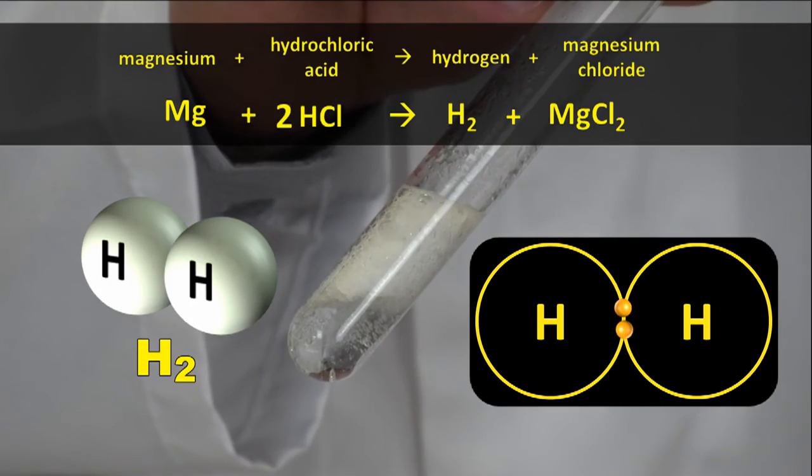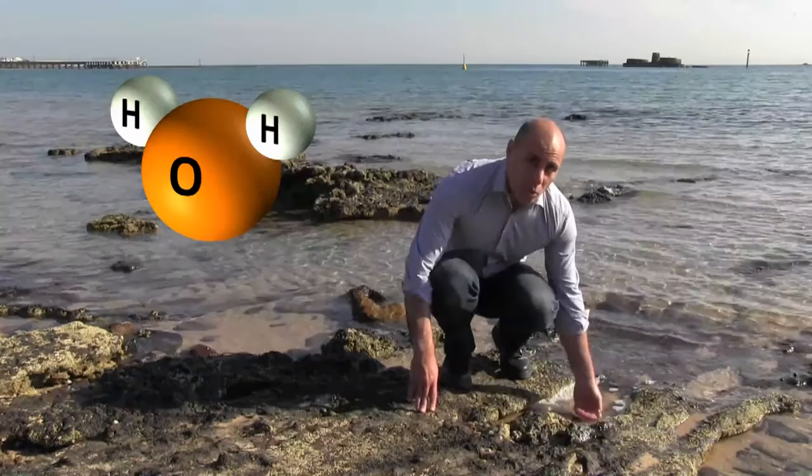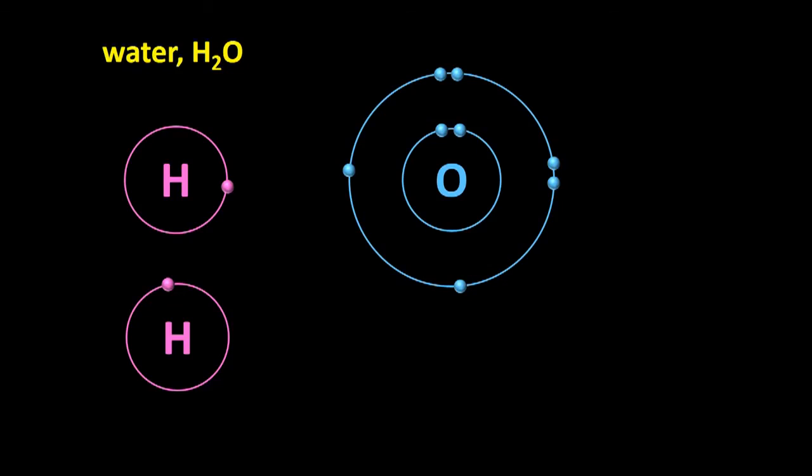Hydrogen molecules, H2, are the simplest of all molecules. Let's now look at water, a slightly more complicated example. Now even though all electrons are identical, we'll color code them so that you can more easily see what's going on.